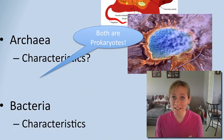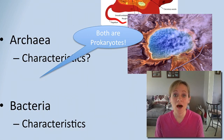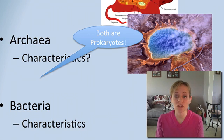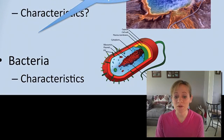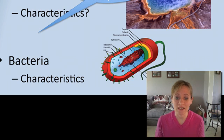And the last domain is bacteria. Remember that both archaea and bacteria are considered prokaryotes versus eukaryotes. Prokaryotes don't have a nucleus in general — their structure is much more simple. This is an example of a bacterial cell. Without a nucleus, we just call this region a nucleoid where the DNA is kept.